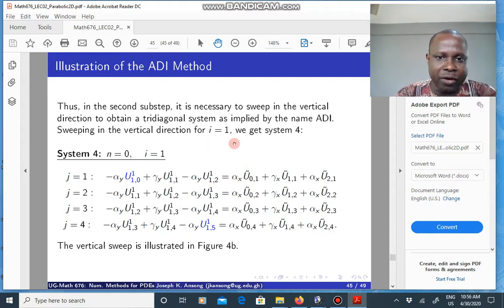If you take i equals one for instance, plug in any zero in the equation, you get a system for different values of j. When j is one, when j is two, when j is three, you get the system of equations. The right hand side is known.